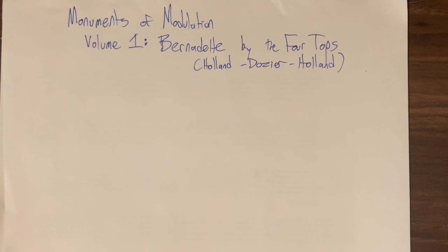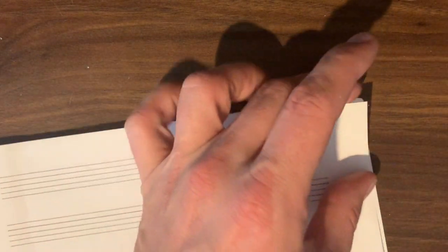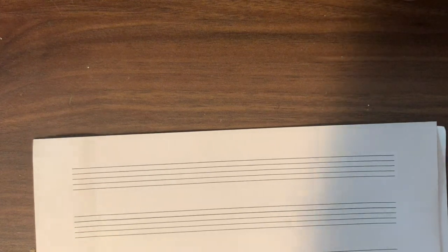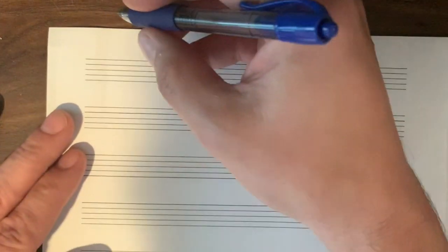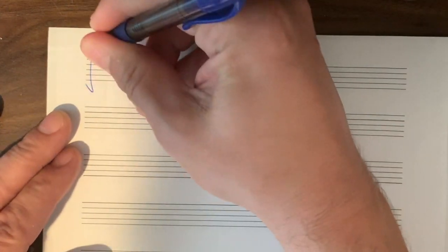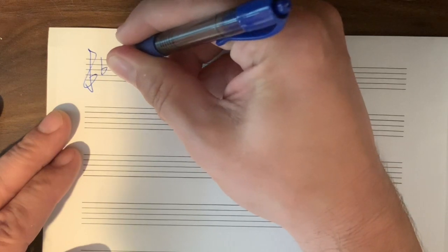So let's listen up to there and figure out what's happening. Start with the bass line. This song is in the key of E flat. In fact, tangent — this song is a great example of something we call modal mixture.